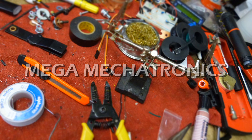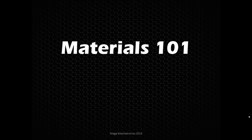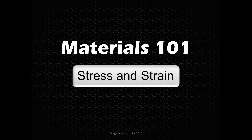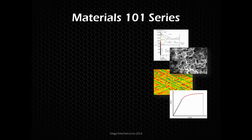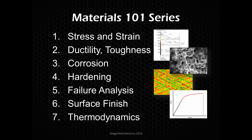Welcome to the Mechatronics Boot Camp Series for Mechanical Engineering. Today we're going to be talking about materials, stress and strain. Throughout this series we're going to cover topics on stress and strain, ductility, corrosion, hardening, heat treatments, failure analysis, surface finish, and thermodynamics. And we're going to be covering stress and strain today.